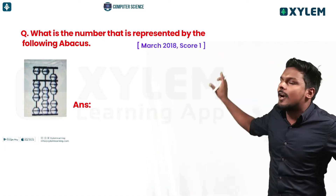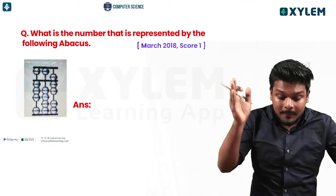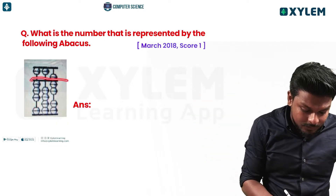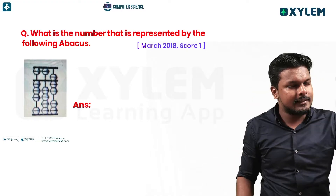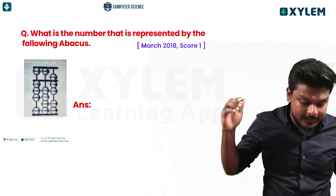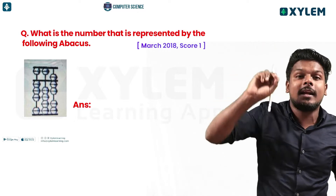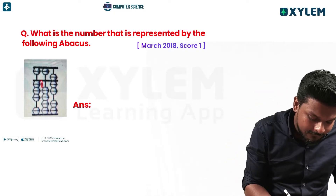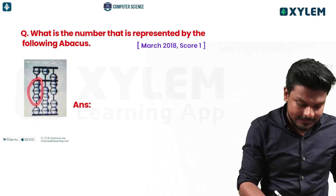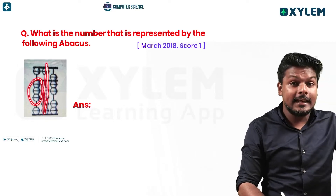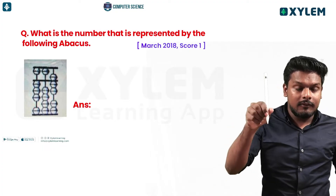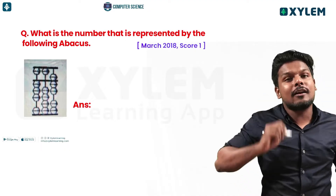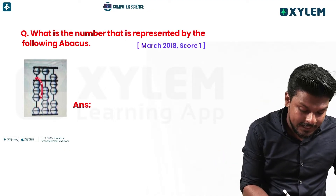Next question: what is the number represented by the following abacus figure? Looking at the figure, horizontal lines and vertical lines — horizontal line indicates 5, vertical line indicates 1. So here we have 3, and in the center it is 0.